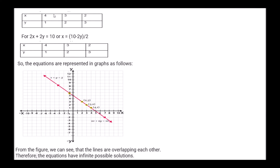Next, for the coincident case: x = 4, y = 1; x = 3, y = 2; x = 2, y = 3. For 2x + 2y = 10, or x = (10 - 2y)/2: if x = 4, y = 1; x = 3, y = 2; x = 2, y = 3. The graphical representation shows that the lines are overlapping each other. Therefore, the equations have infinite possible solutions.